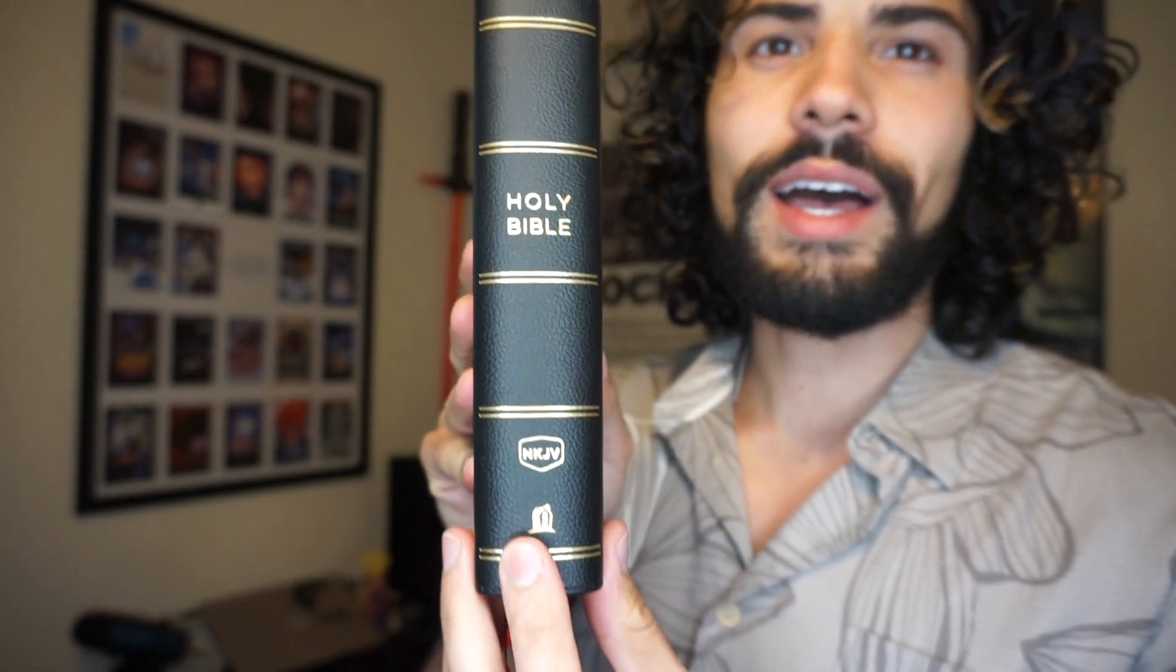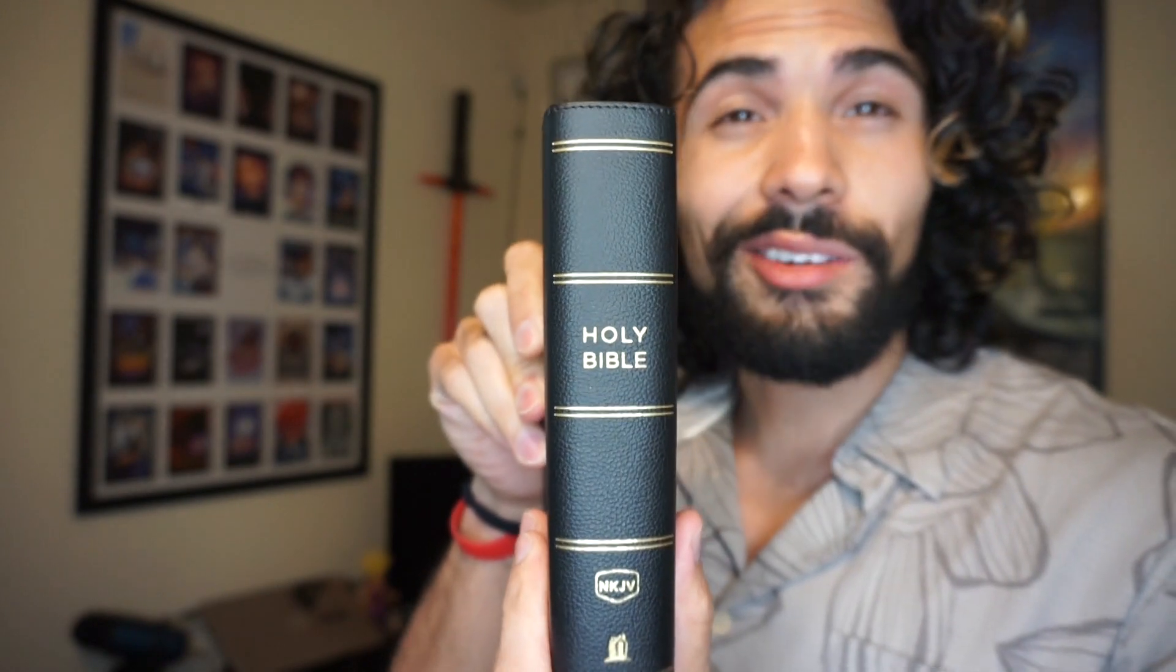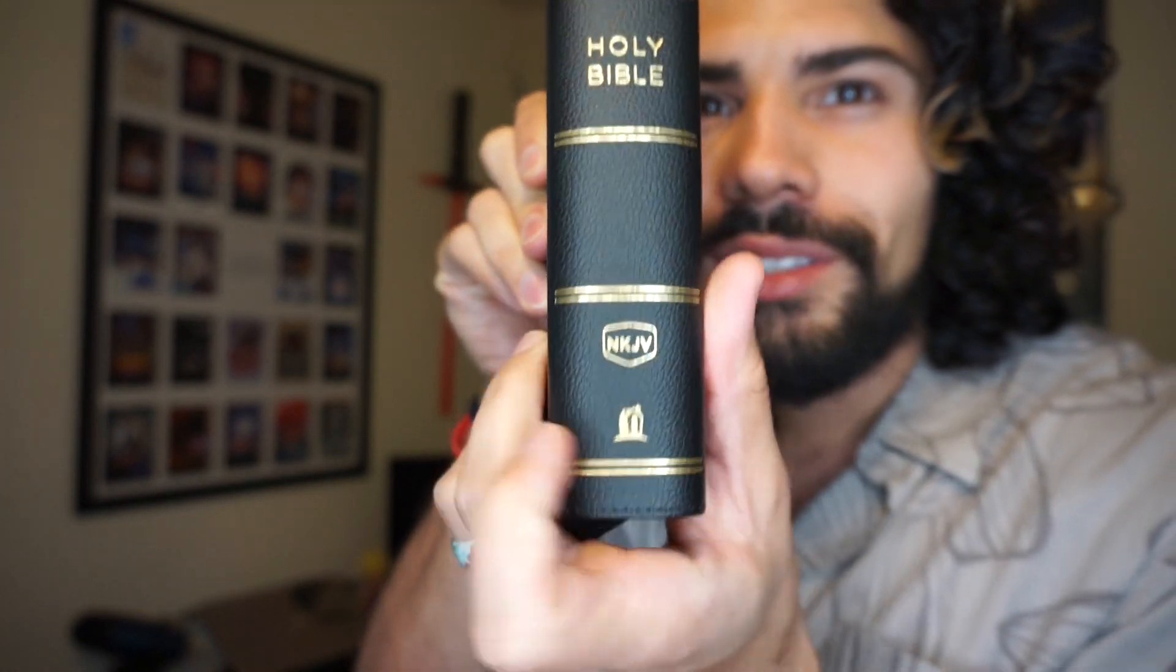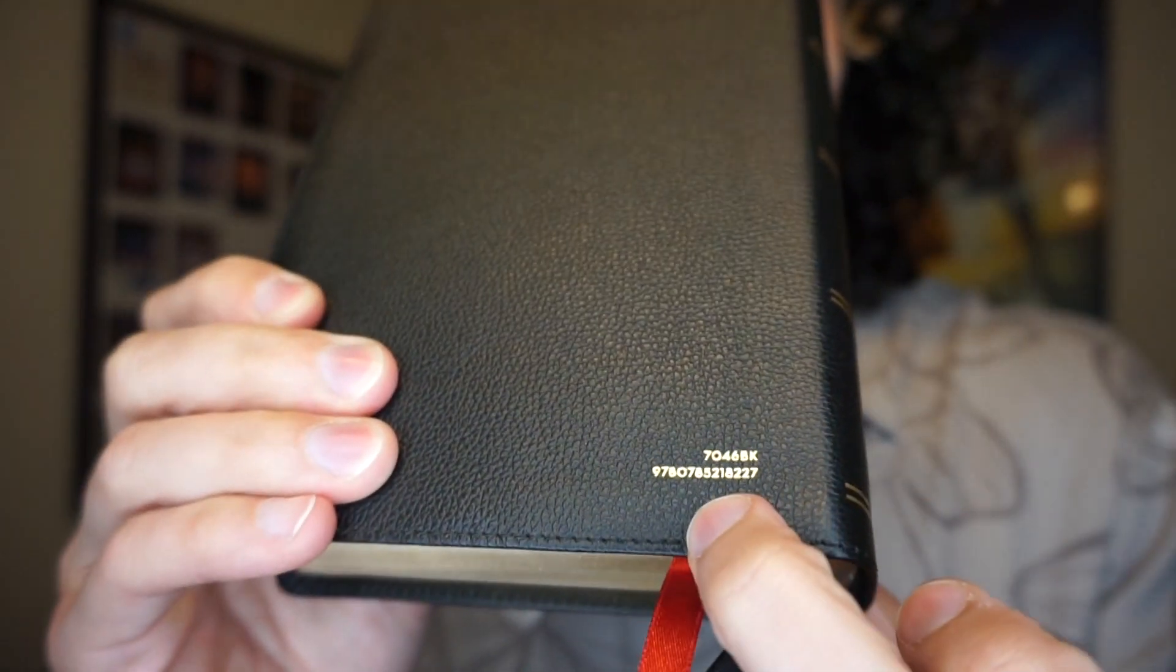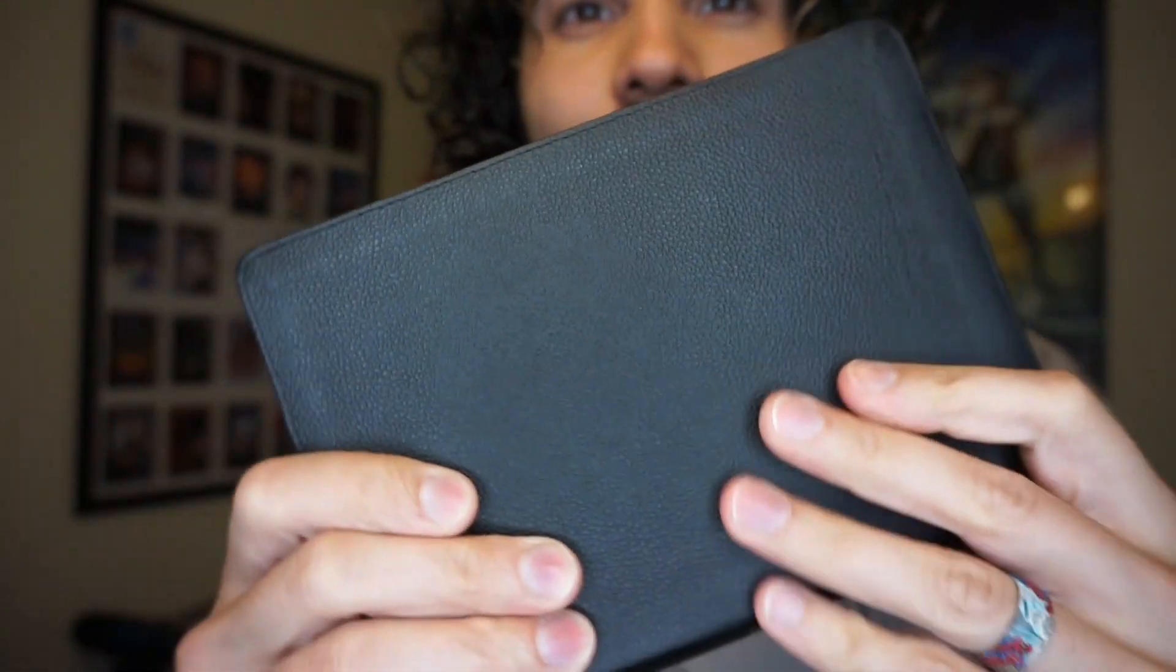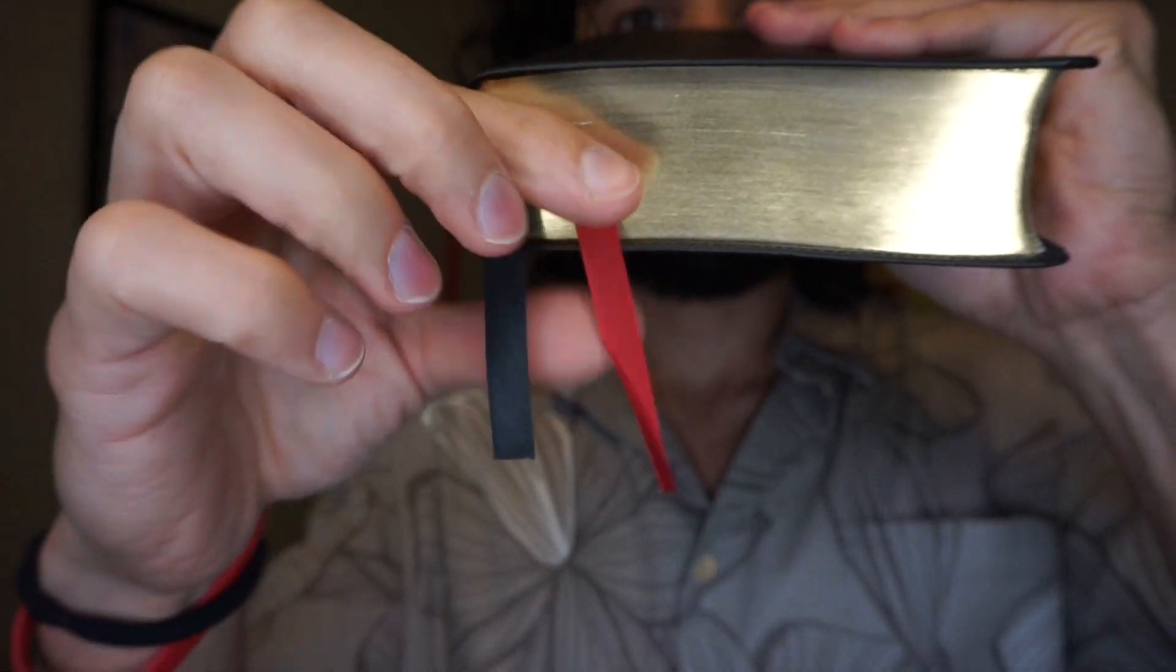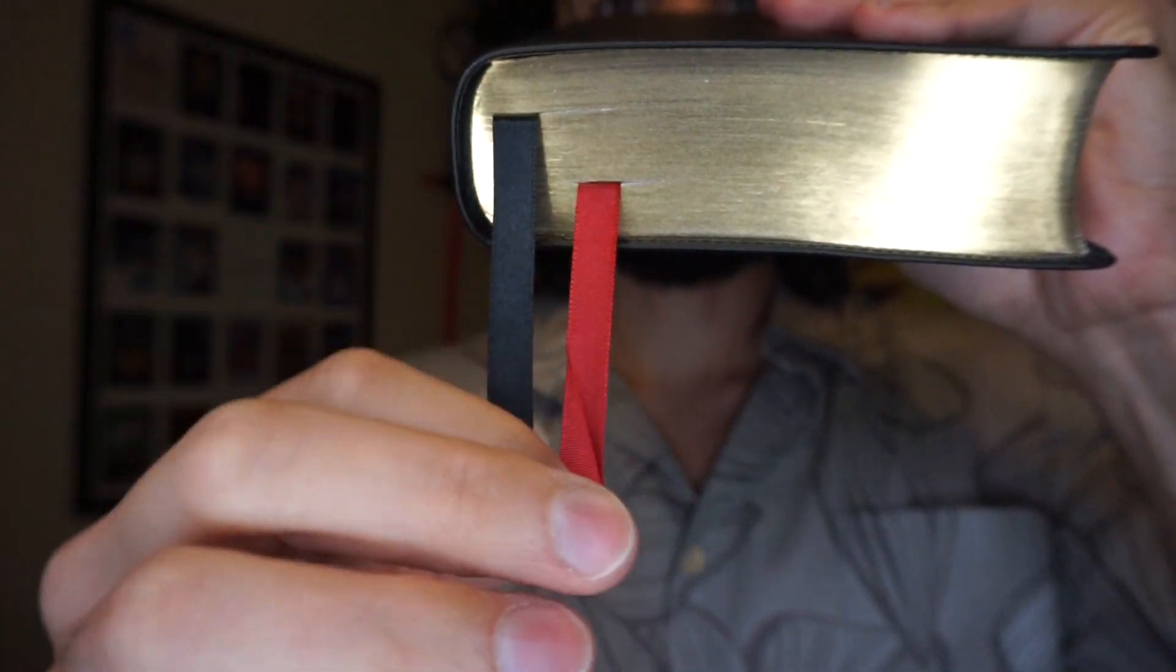Here's a look at your spine, nice simple and clean, looks really good. You got one two three four five, ten golden lines going across. Holy Bible NKJV Thomas Nelson, and on the back you are going to have an ISBN in gold.